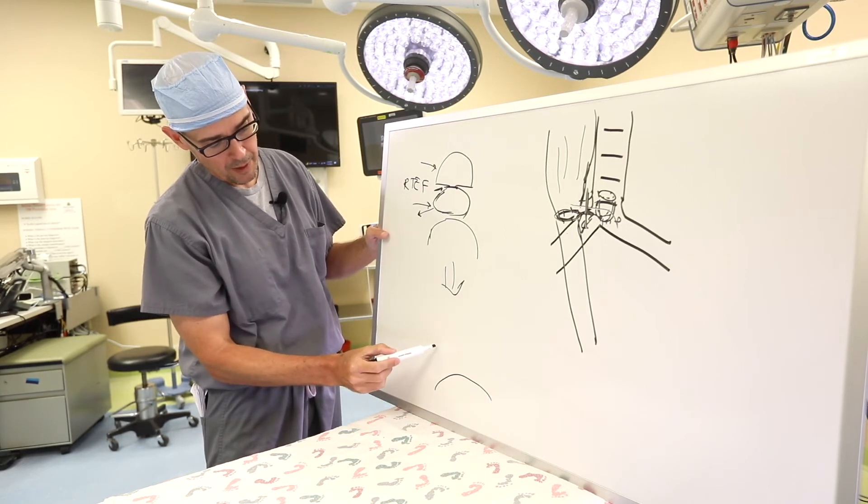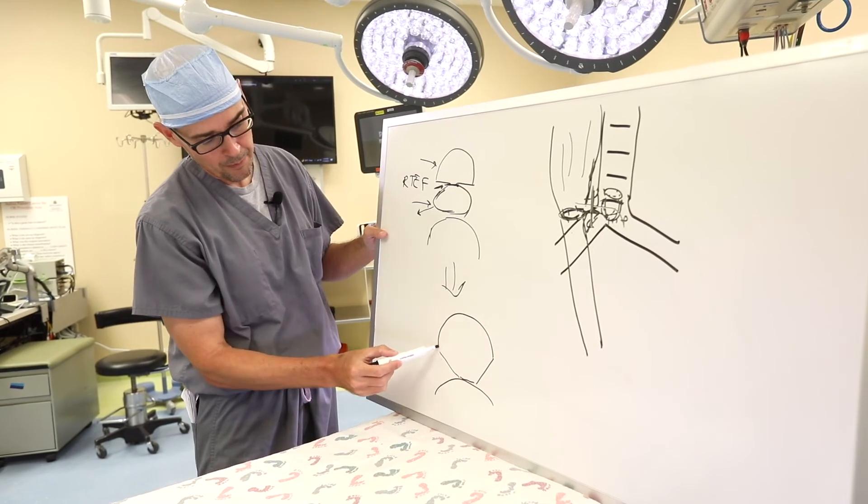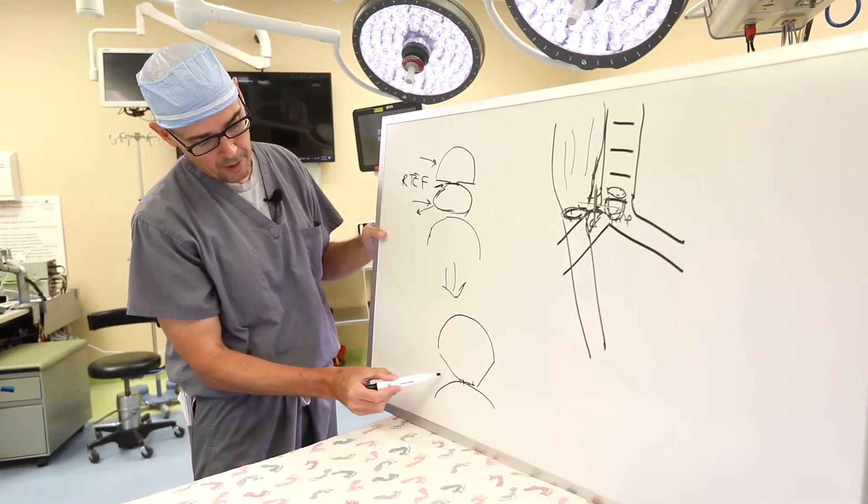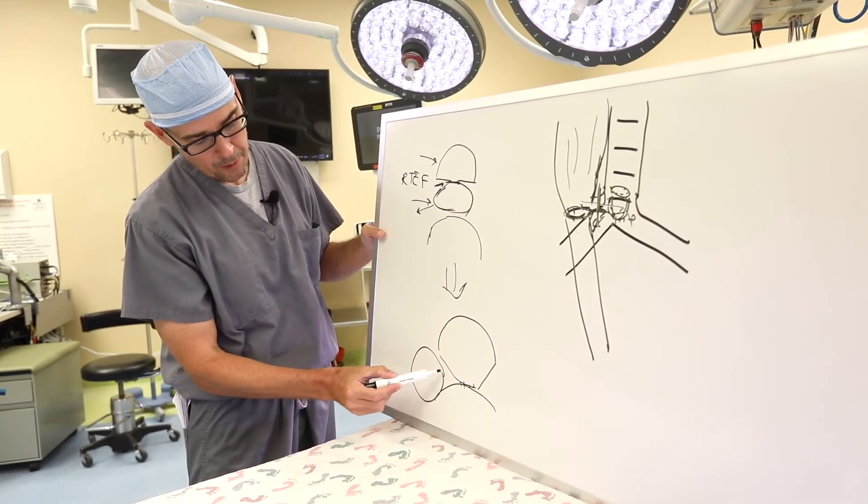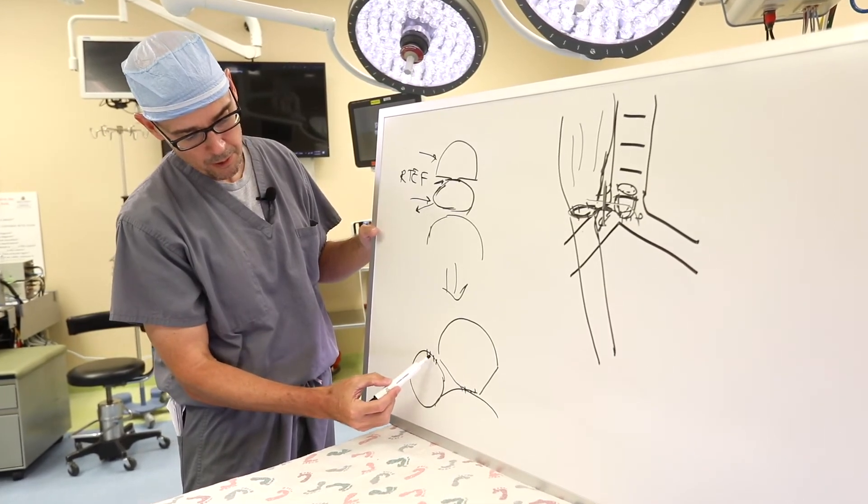If this is the spine, the trachea has been pulled back here. The esophagus is now off to the side with its closure here.